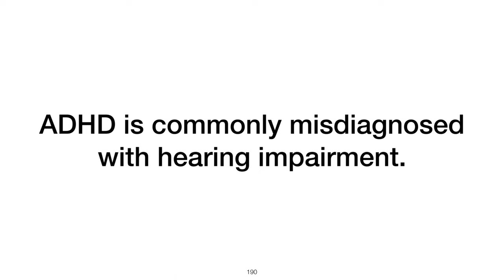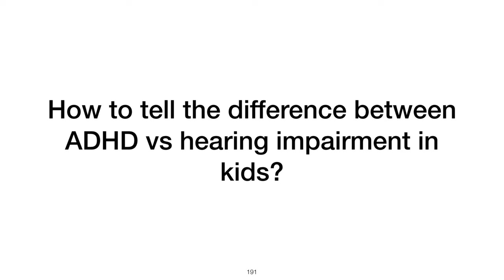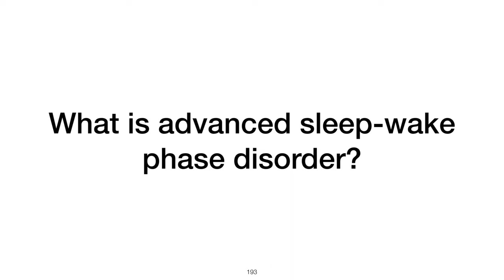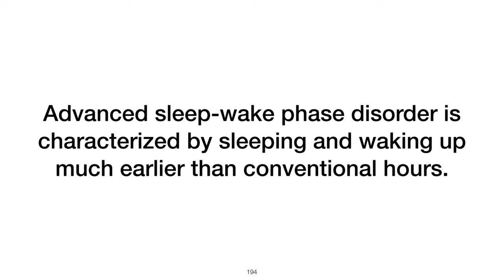ADHD is commonly misdiagnosed with what other condition? ADHD is commonly misdiagnosed as hearing impairment. The difference can often be discerned through evaluating language development progress and social interaction, with hearing impairment typically associated with poor progress in language development and social isolation. What is advanced sleep-wake cycle disorder? It is characterized by falling asleep earlier than conventional hours and waking up naturally several hours before dawn.